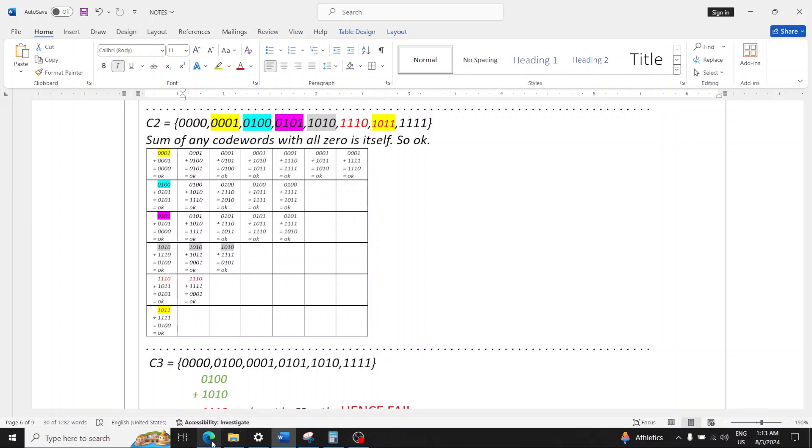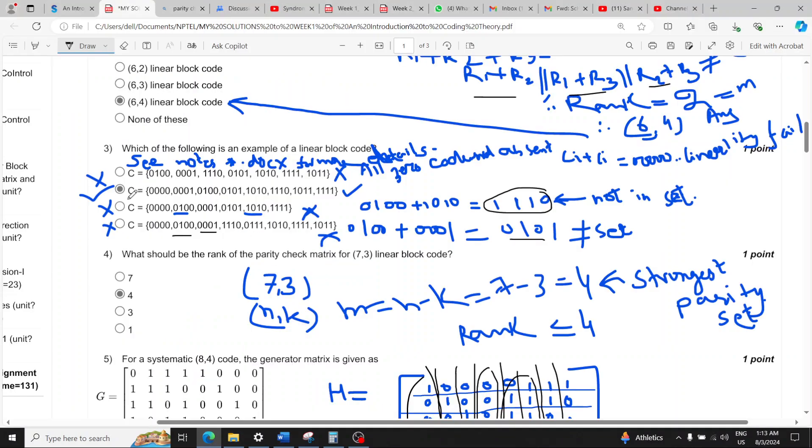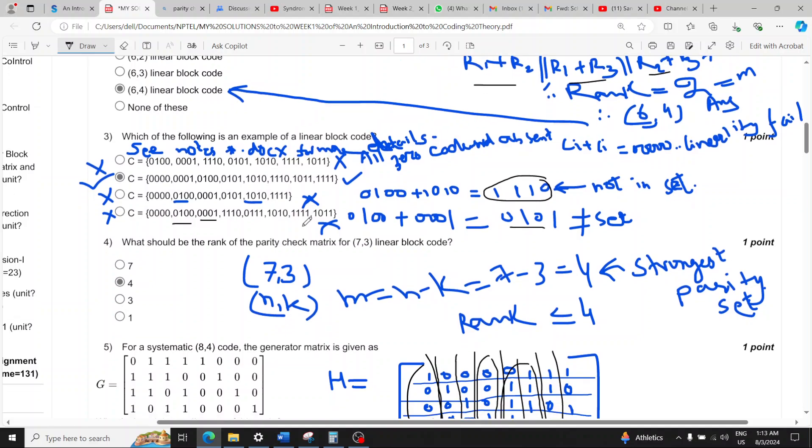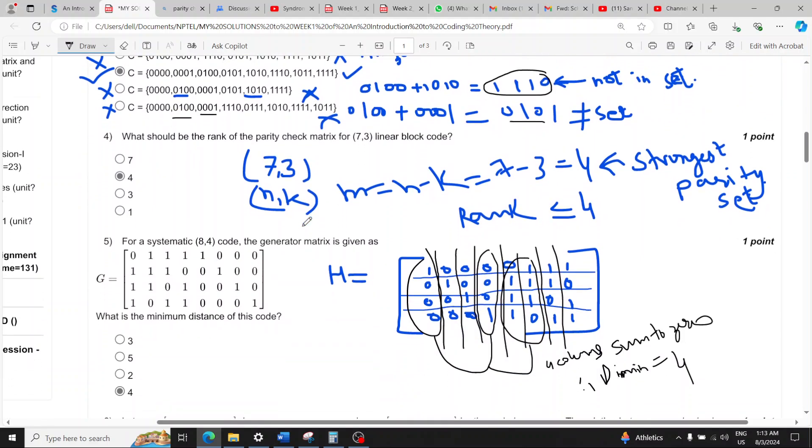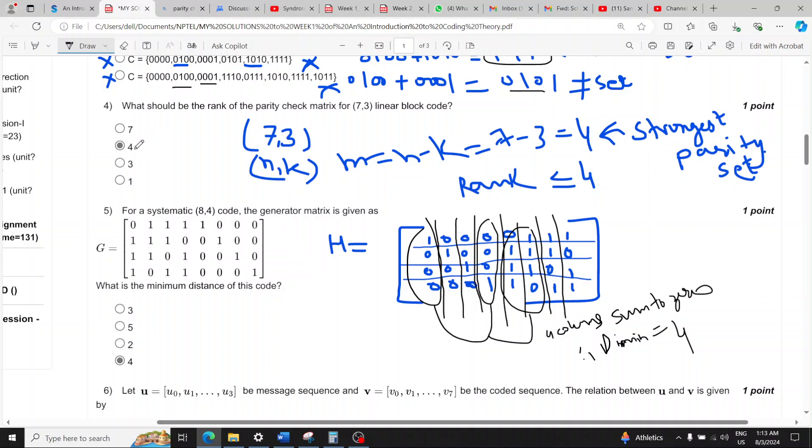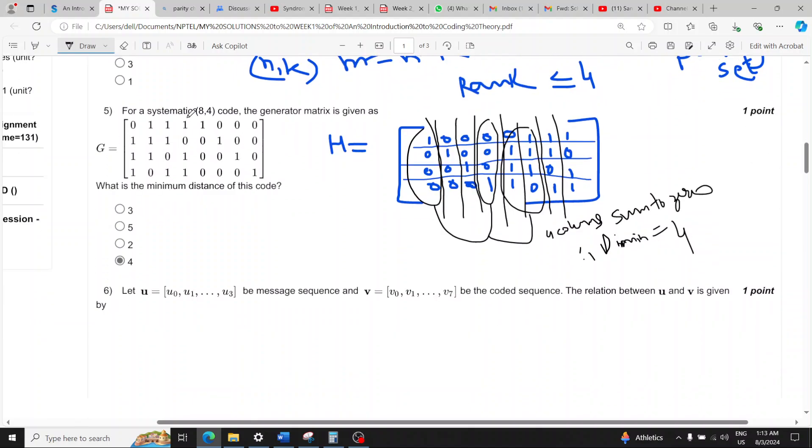If we check sums of all possible combinations, all of the sums result into a code word that falls inside the set, the given set. So this one is correct, second option is correct for question three. For question four option two is correct because we need the rank to be n minus k which is four.